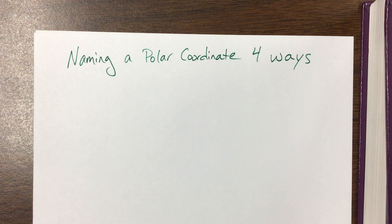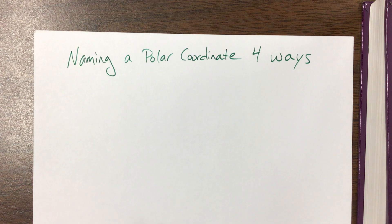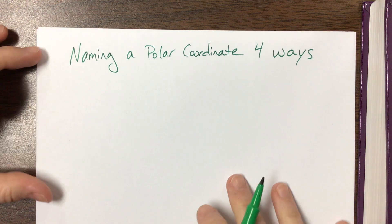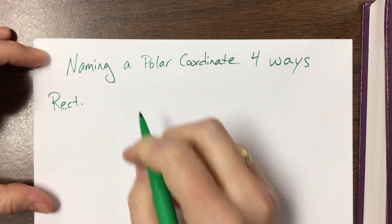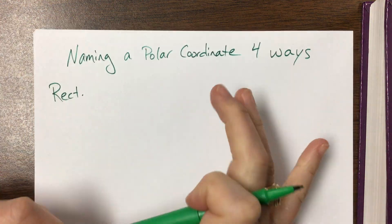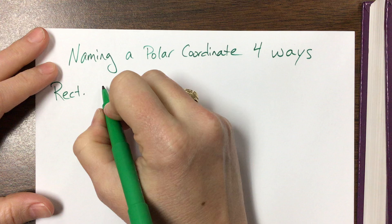I want to make sure that this is clear. There's four great ways to name a polar coordinate. So let's say that they've given me a rectangular point and I'm gonna make this friendly, and let's say it's...